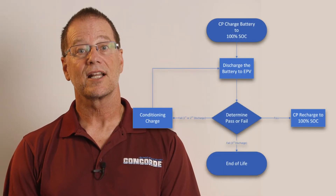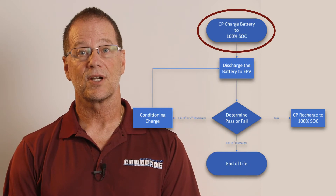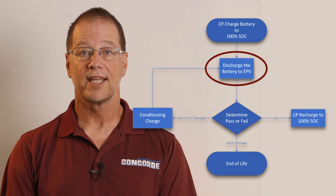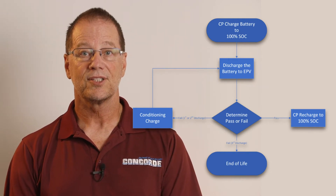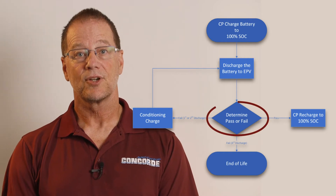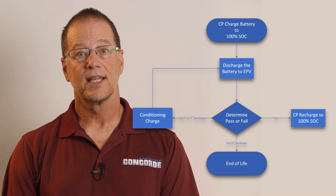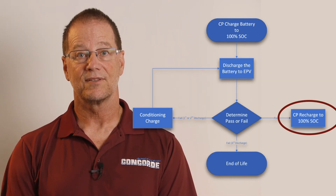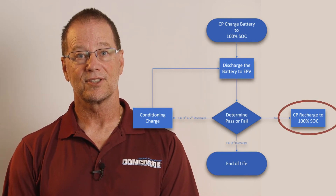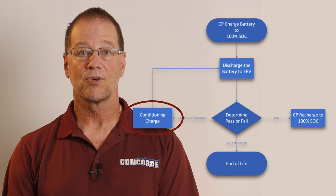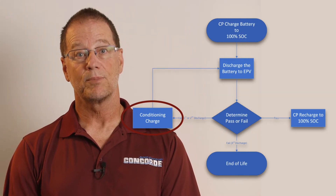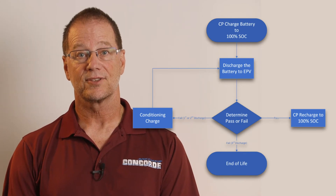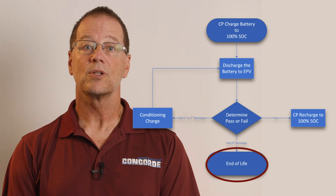The flowchart shown on the screen outlines the basic procedure for capacity testing. First, the battery is charged at constant potential to 100% state of charge. Second, the battery is discharged at constant current to the endpoint voltage. Third, based on the measured discharge time, determine if the battery passes or fails. If the battery passes, recharge the battery at constant potential to 100% state of charge so it is ready for aircraft installation. If the battery fails, perform a conditioning charge and repeat the capacity test. If the battery does not pass after three discharge tests, it is considered end of life and should no longer be used.